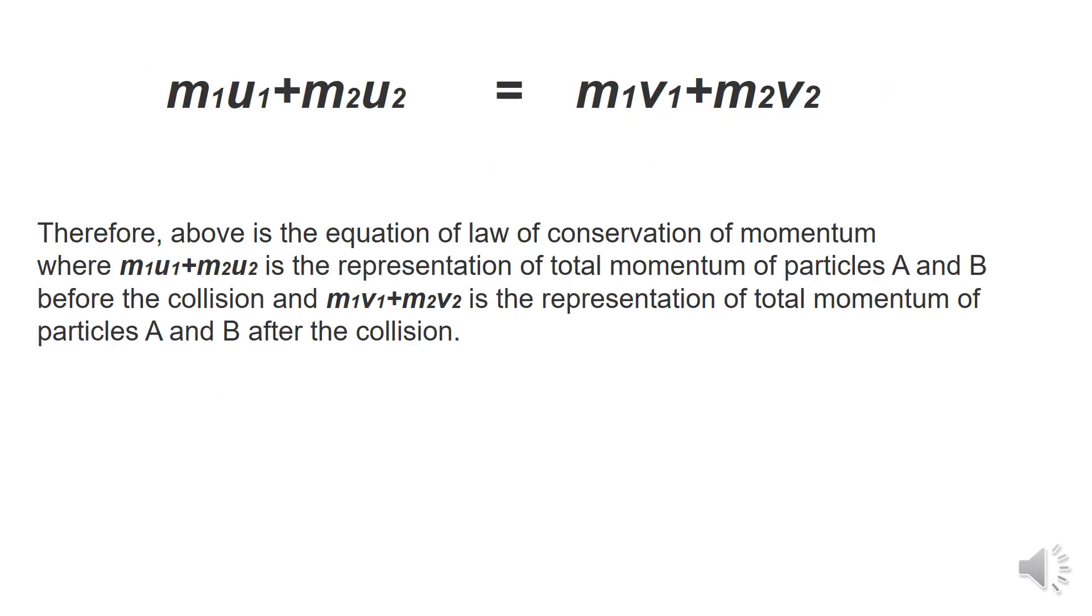So, what does this equation mean? The above equation is the law of conservation of momentum, and M1U1 and M2U2 is the representation of total momentum of particles A and B before collision, and M1V1 plus M2V2 is the representation of total momentum of particles A and B after the collision. So, we can see that the momentum before and after the collision obviously remains the same.